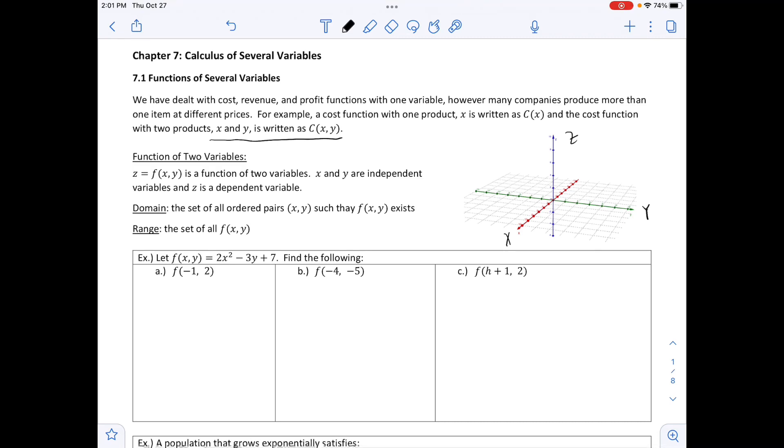Find the following. So the first thing that we have is F of negative 1 comma 2. And so negative 1 is our X value, and 2 is going to be our Y value. And we're just going to substitute that into the function that's given up above. And we have 2 times X, and X again is negative 1. And that's raised to the second power, minus 3 times Y, which is 2 plus 7. And so working this out, we have 2 times 1 minus 6 plus 7, or 2 minus 6 plus 7, which is negative 4, plus 7, which is 3.